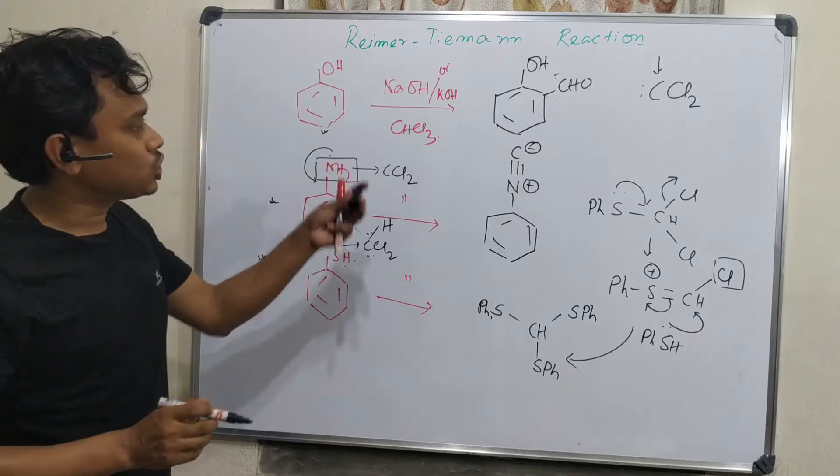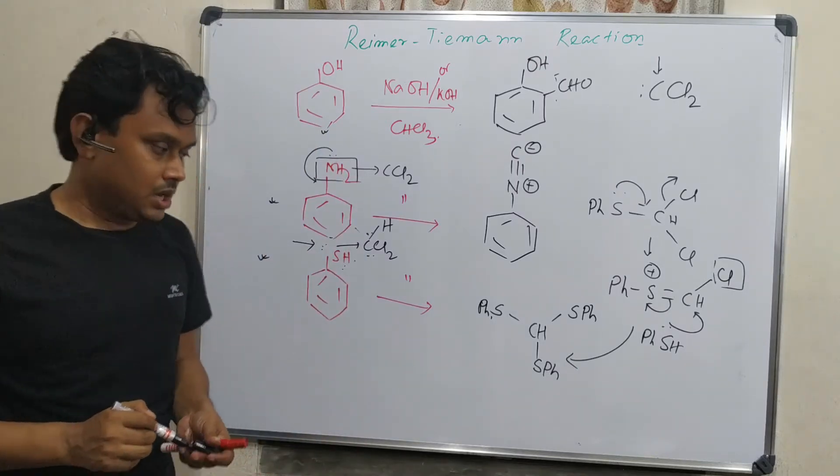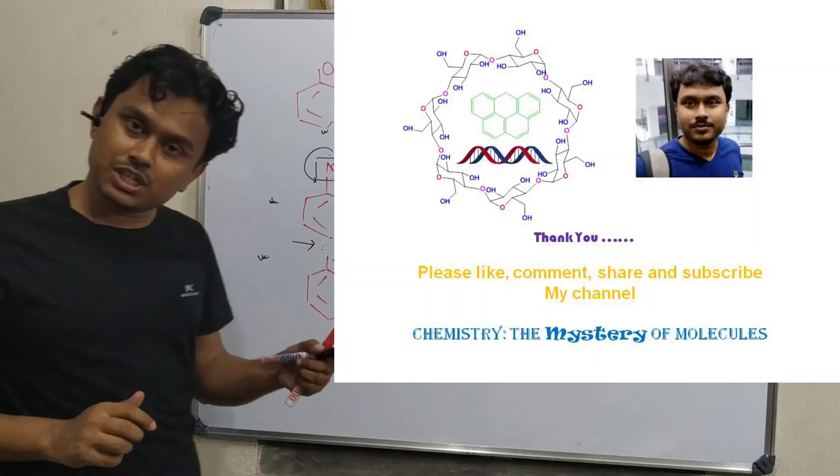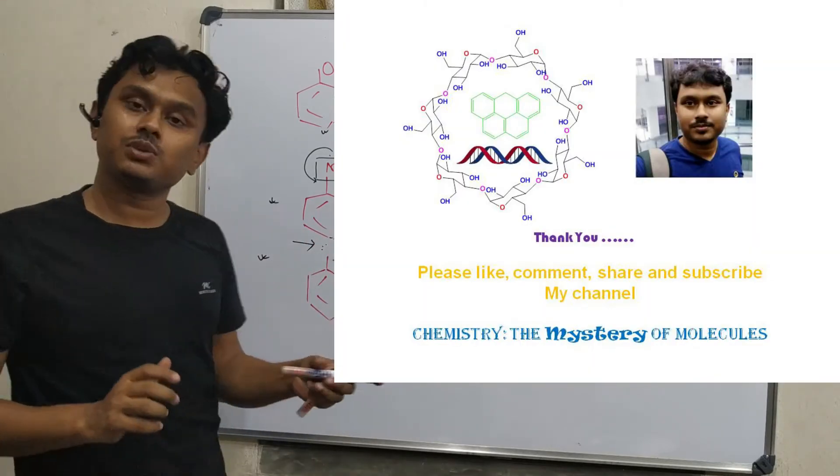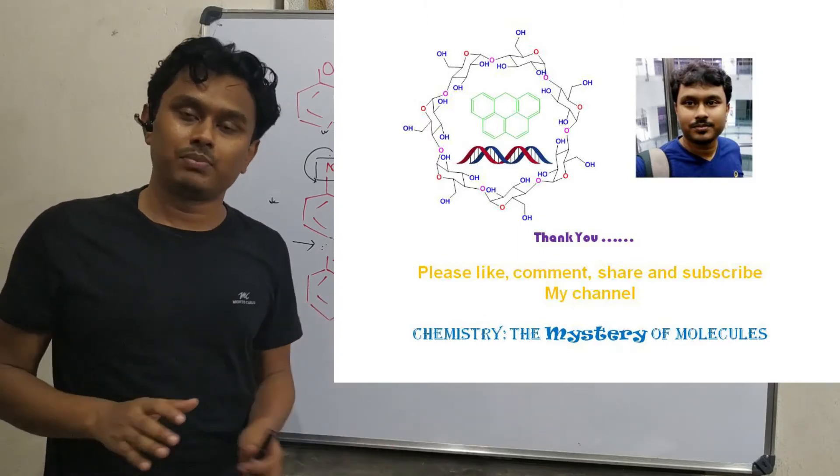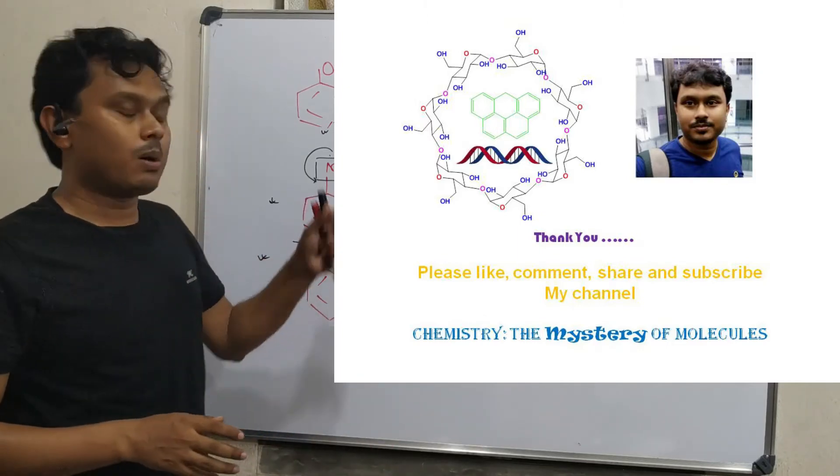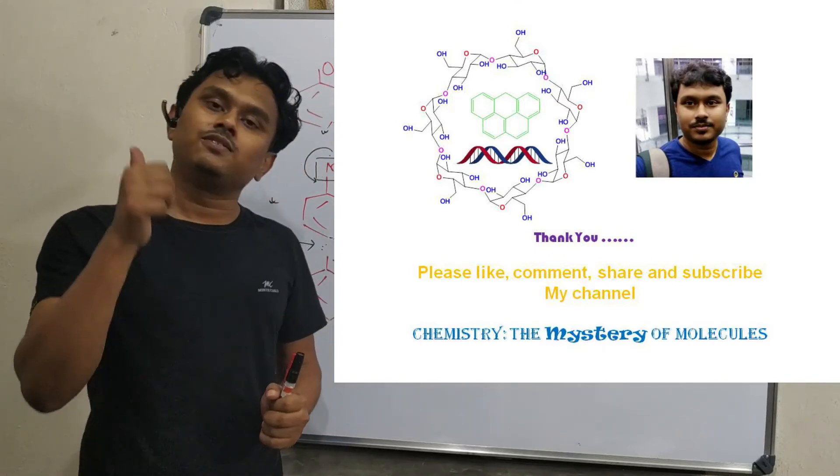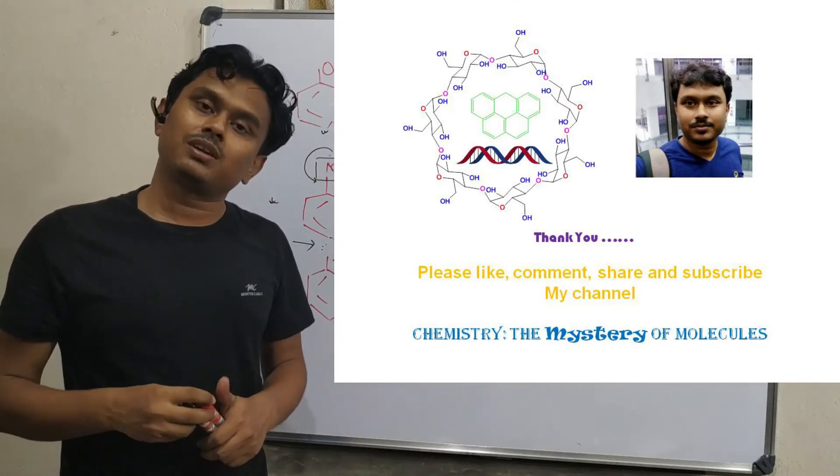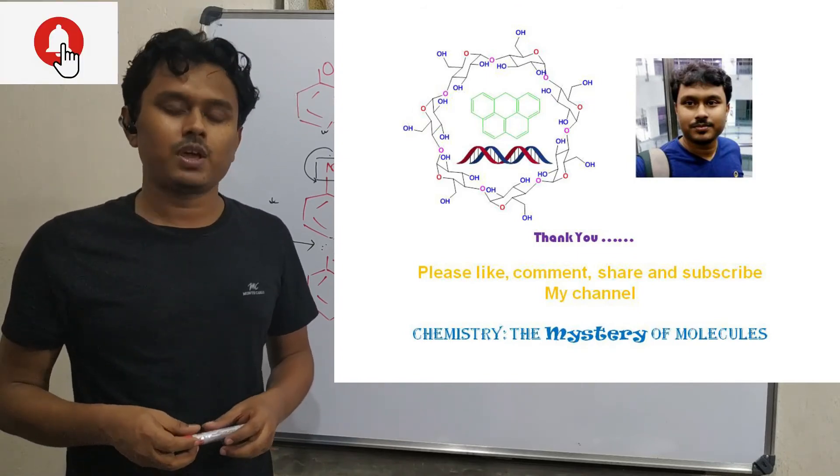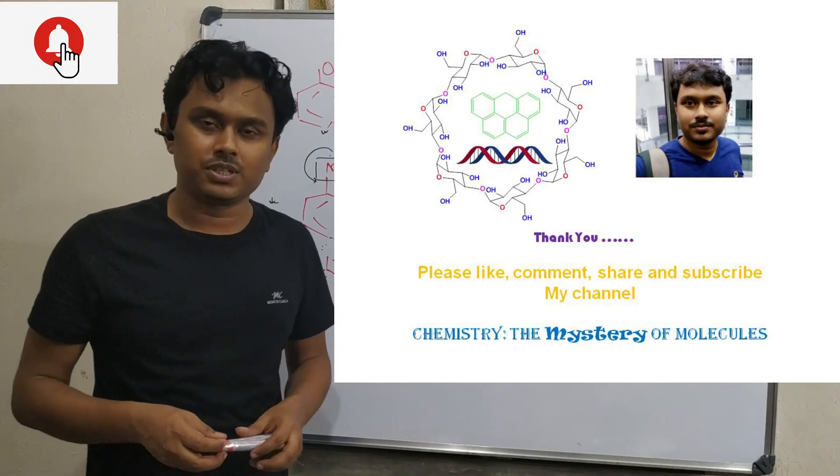So, in this way, these three nuclei react differently. This is formally the end of discussion of basic Reimer-Tiemann reaction with mechanism. In the next video, I shall give you some examples, different types of examples about Reimer-Tiemann reaction. So, if you like my teaching, please give a like and subscribe my channel Chemistry: The Mystery of Molecules and please press the bell icon to get the notification of every single video I upload. So, see you in my next video.